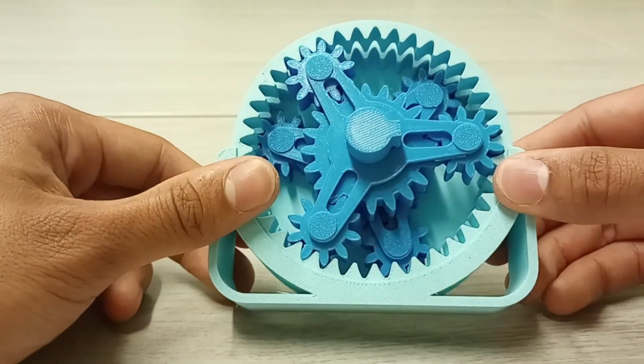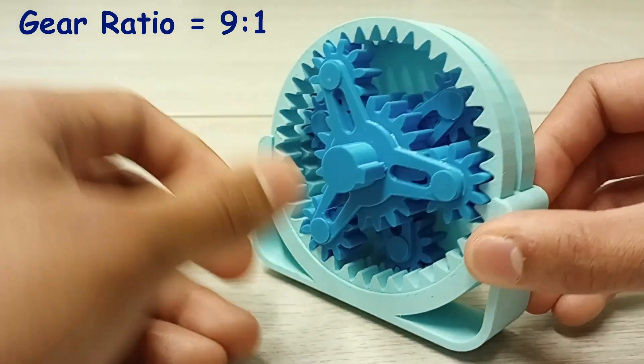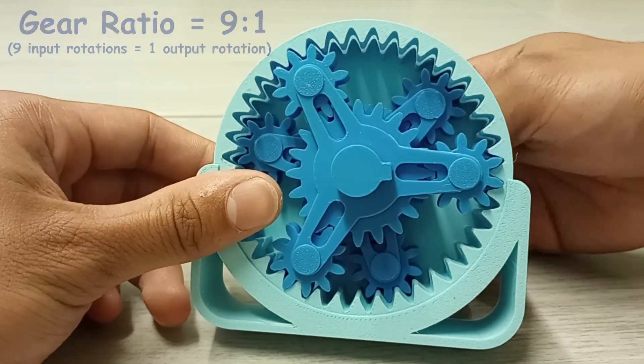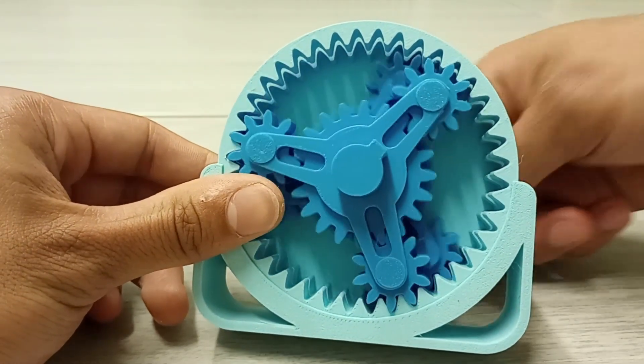This particular model has a gear ratio of 9 to 1, meaning that the input is 9 times faster than the output speed. In this video I will show you exactly how this system works.